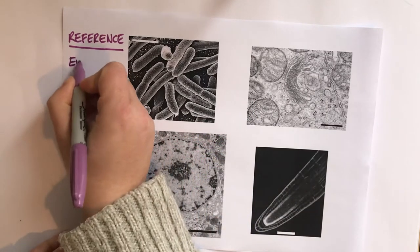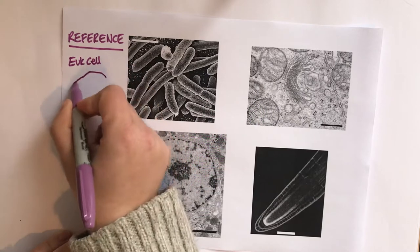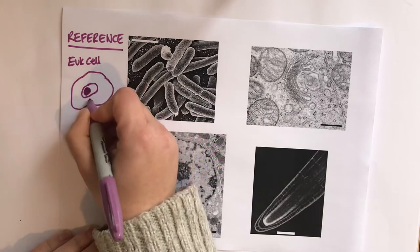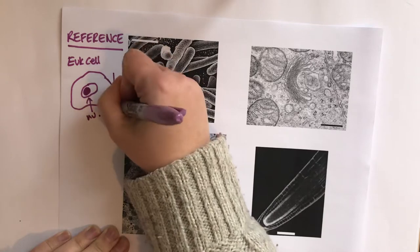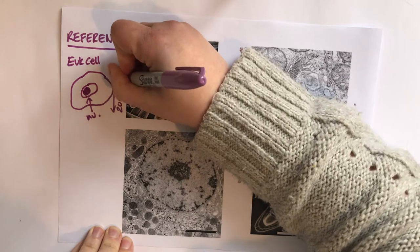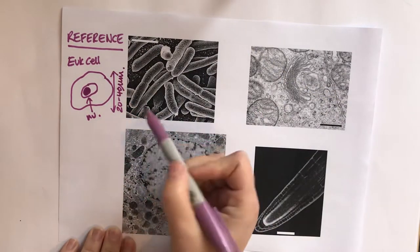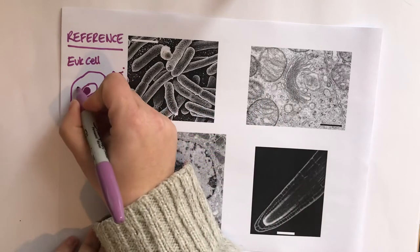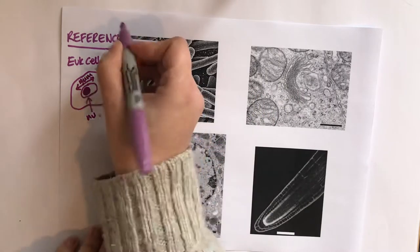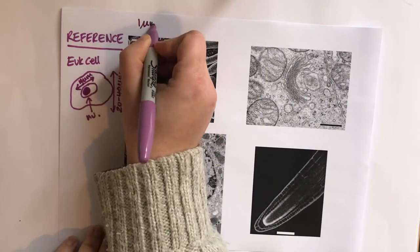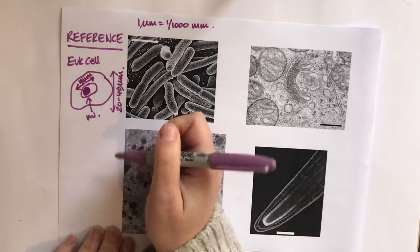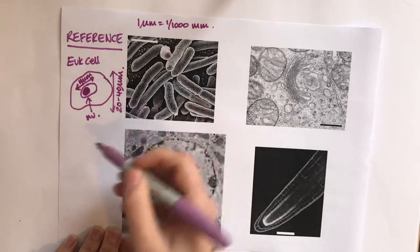So a eukaryotic cell, here's my eukaryotic cell, there's the nucleus with the nucleolus. A eukaryotic cell is usually between 20 to 40 micrometers across, and you'd usually expect the nucleus to be about 10 micrometers. Remember, one micrometer equals one thousandth of a millimeter.